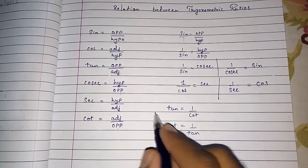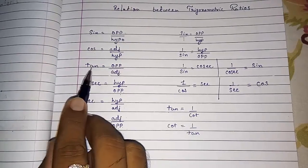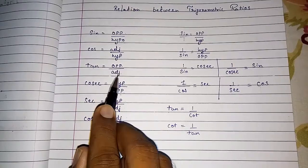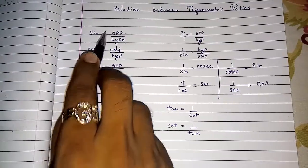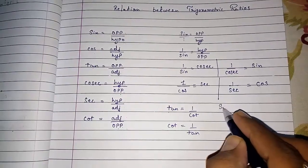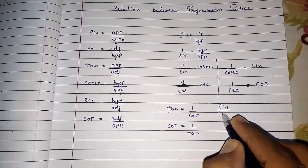But still we can find something more. Look here. Tan is opposite by adjacent. If I divide sin by cos. Look here I am dividing sin by cos.